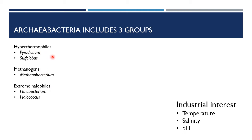Archaebacteria mainly includes three groups: hyperthermophiles, methanogens, and extreme halophiles. Hyperthermophiles are adapted for living at higher temperatures — examples are Pyrodictium and Sulfolobus. Methanogens produce methane gas — example is Methanobacterium. Extreme halophiles love living in high salinity. In terms of economic importance, industrial interest lies in their tolerance of temperature, salinity, and pH.